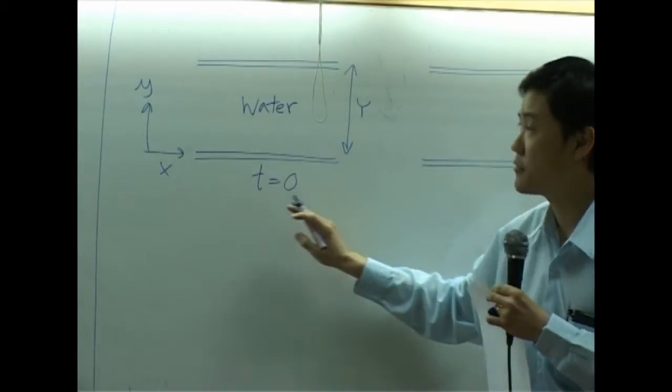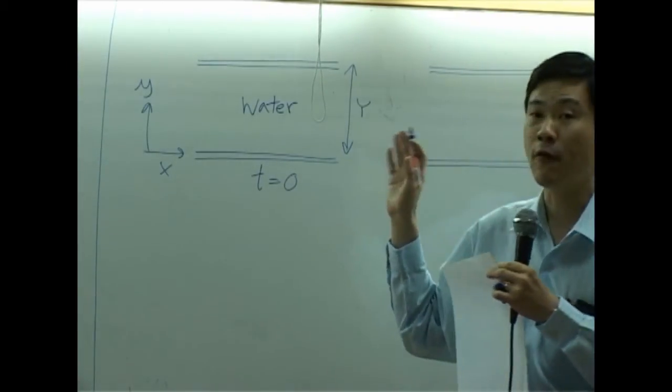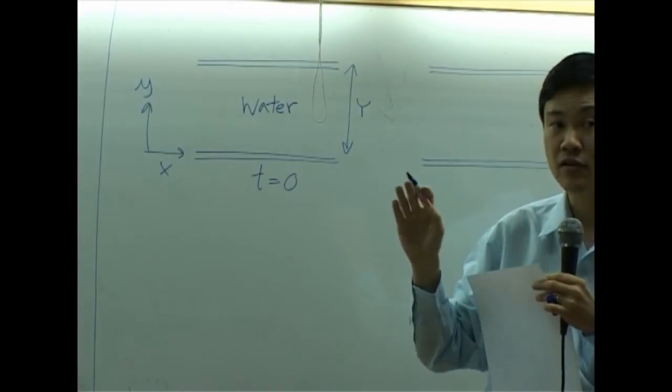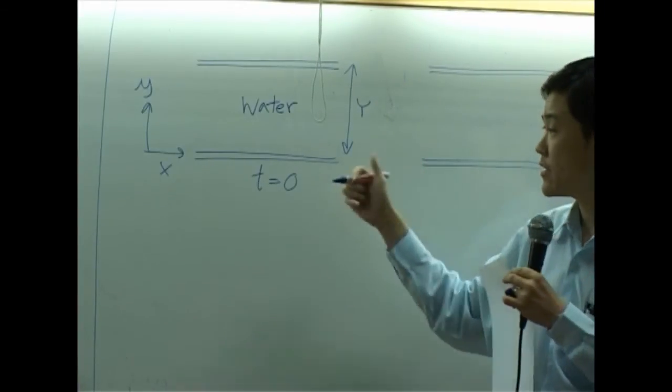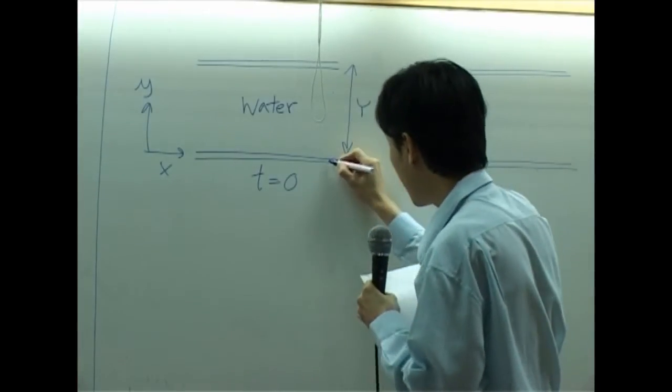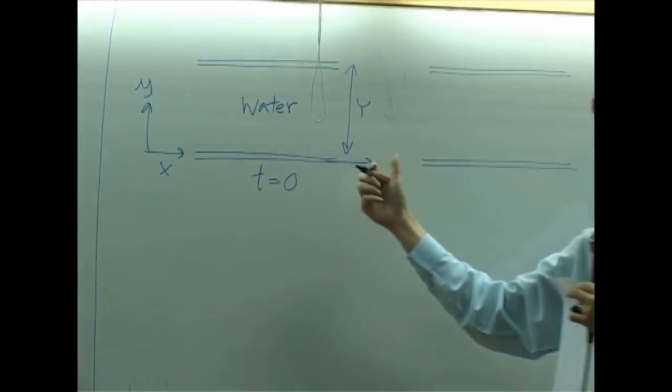At t equal to zero, if before t equal to zero everything stands still, there's no movement. At t equal to zero, you start pulling the bottom plate from the left to the right.